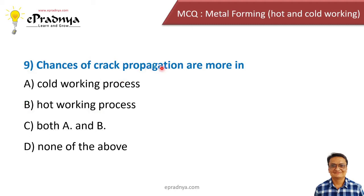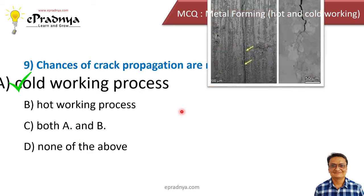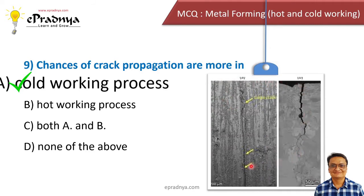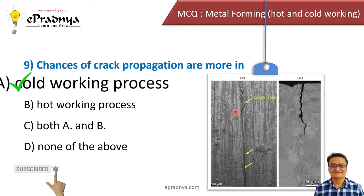Ninth MCQ: Chances of crack propagation are more in — cold working process, hot working process, both, or none of these? The correct answer is cold working process. The chances of crack propagation are more in cold working because of work hardening. In cold working, work hardening of the material takes place, so the material becomes harder, it loses ductility, and there is a greater chance that cracks will form.